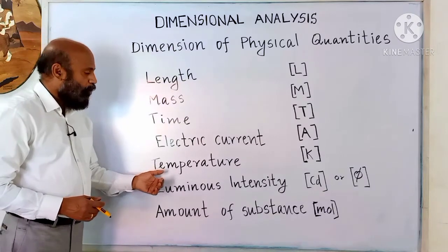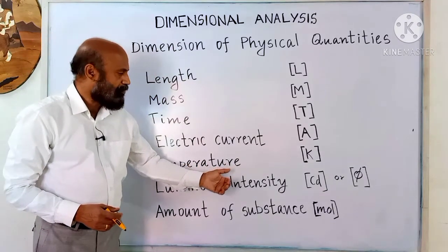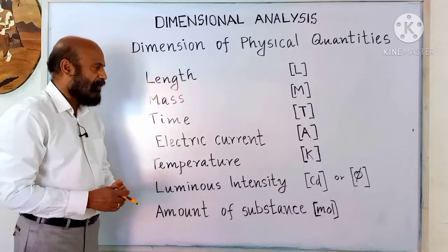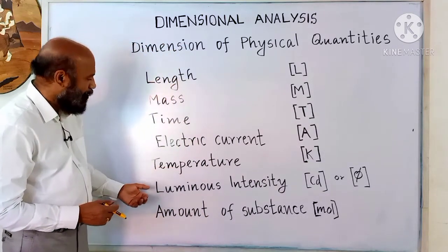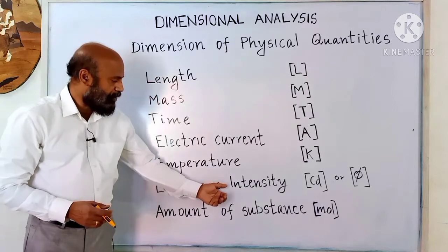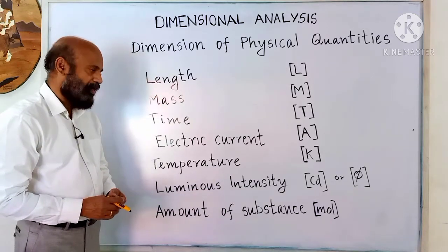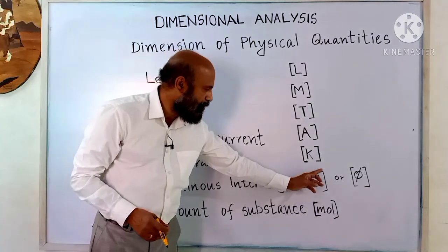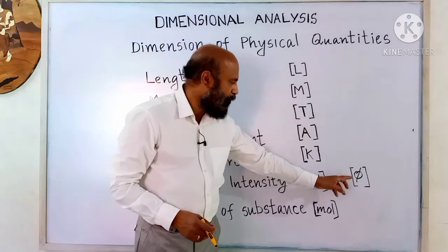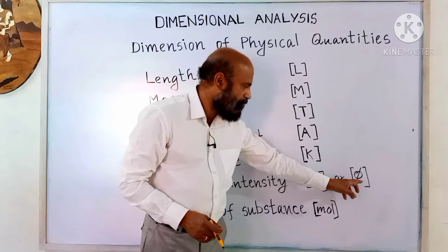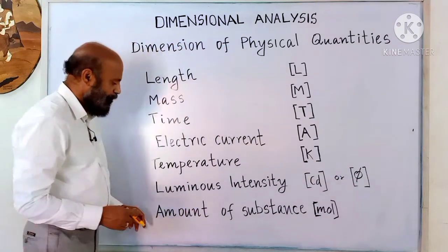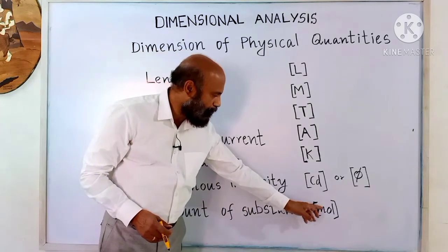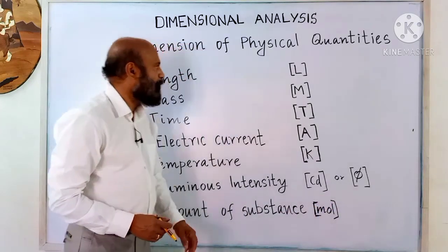Dimension of temperature is capital K, since temperature is measured in Kelvin. Luminous intensity is measured in Candela, so its dimension is Cd within the bracket. Another representation is also there. Then amount of substance is represented as mole within the square bracket.